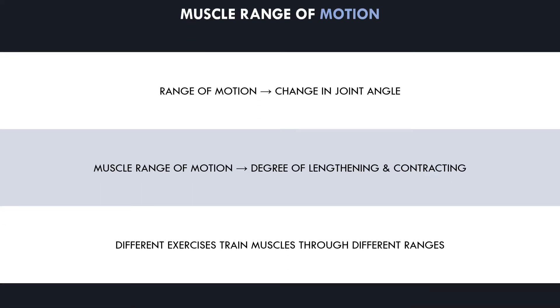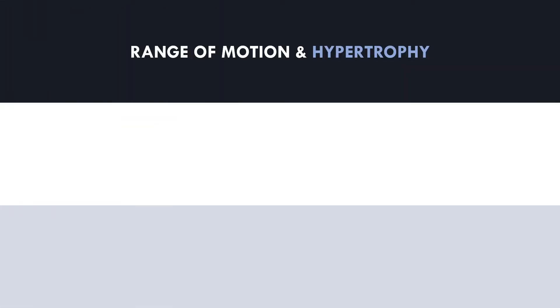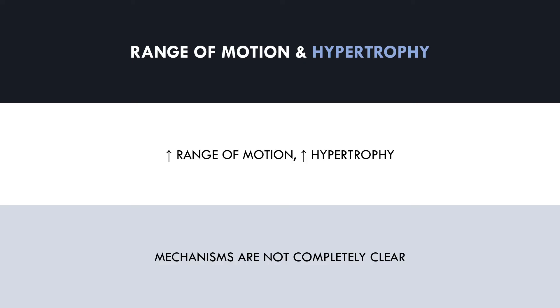So how does range of motion influence hypertrophy? In general, we see superior hypertrophy outcomes when training with full range in comparison to partial range. While we don't fully understand why this may be the case, there are some potential mechanisms that may explain this. We will now cover what these are.